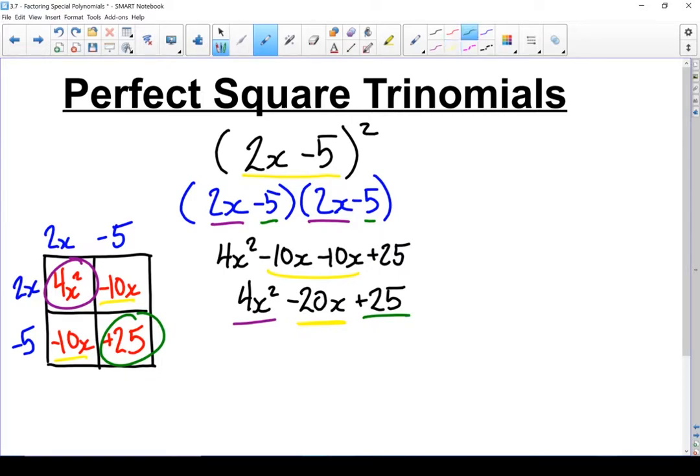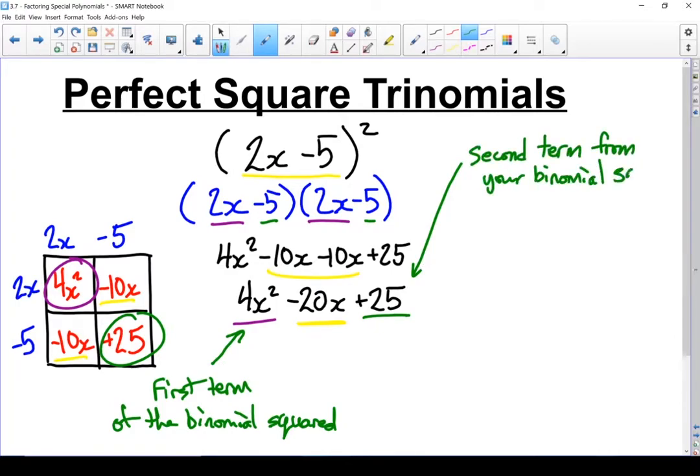Let's put some notes on that. So your trinomial has the first term squared. The last term is the second term of your binomial squared. And this middle term is twice the product of the first and second terms of the binomial.